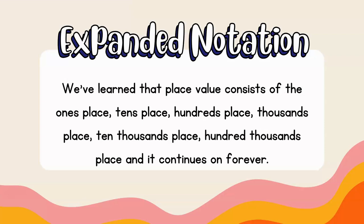Now in the past, we've learned that the place value consists of the ones place, the tens place, the hundreds place, the thousands place, the ten thousands place, the hundred thousands place, and those numbers just keep going on forever. Eventually we're going to reach the millions, ten millions, the hundred millions, billions, and so forth. It continues on forever.